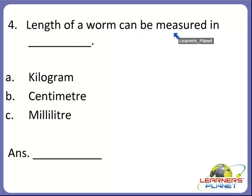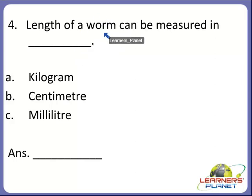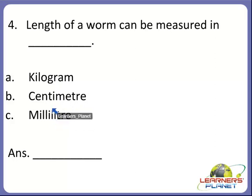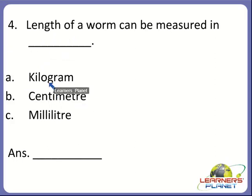Now the next one. Length of a worm can be measured in dash. It is a type of animal — you can imagine an earthworm. The length of a worm can be measured in which unit? Kilogram, centimeter, or millimeter? It is a length, and length is measured in centimeter. So B is the correct answer.